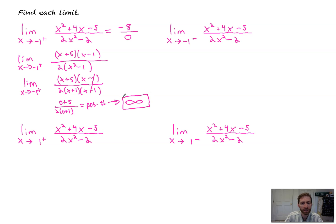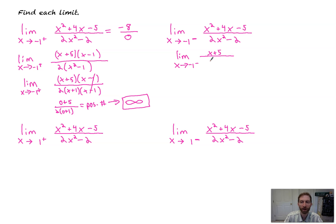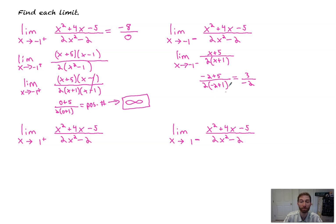So that means the limit doesn't exist and we're going to positive infinity. Now we're going to do the same thing but from the left side. We've already done all our factoring, so the limit as x goes to negative one from the left of x plus five, all over two times x plus one. Now we're approaching negative one from the left side, so plug in a number from the left side, like negative two. Negative two plus five over two times negative two plus one — that gives me a positive three, and this gives me a negative number.